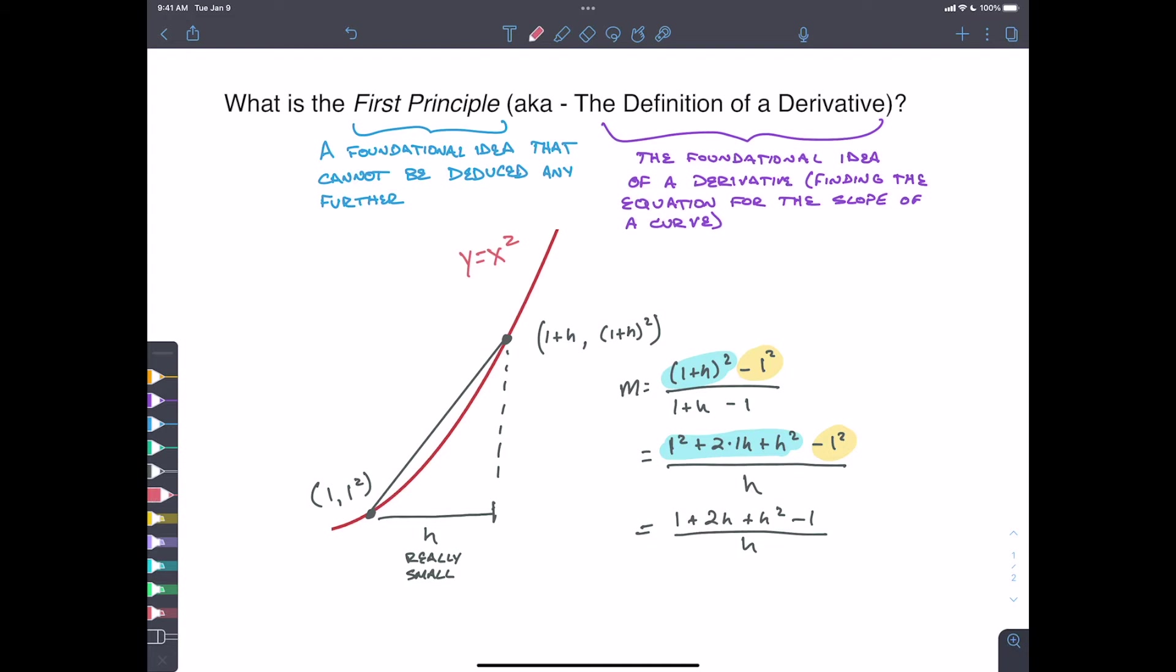So now as we go a little bit further, we've got one plus two h plus h squared minus one over h. All right. Well, look at here. These two things are going to simplify out. So we're left with two h plus h squared over h.